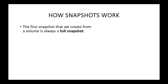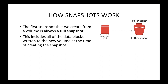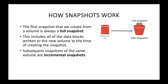Now let's look at how snapshots work. The first snapshot created from a volume is always a full snapshot — a full backup of the entire data in the EBS volume. This first snapshot will include all of the data blocks that exist in the volume at the time of creating the snapshot, because this is the first time you're creating one.